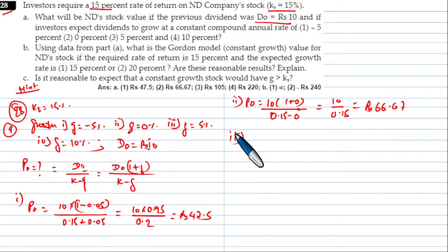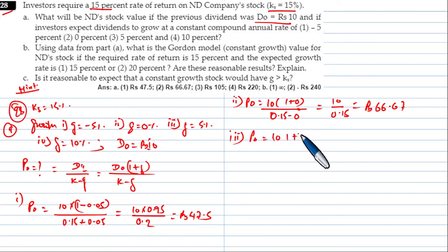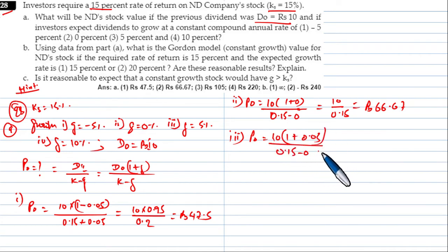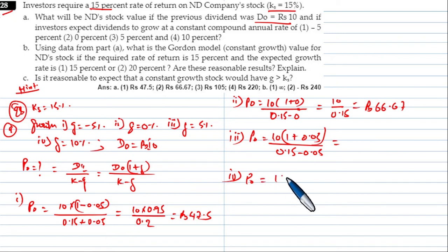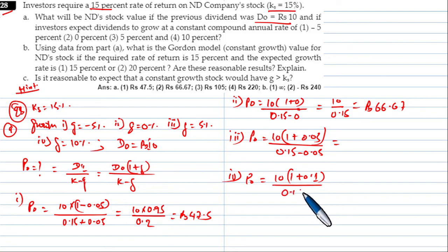For g = 5%: P0 = 10 × (1 + 0.05) / (0.15 - 0.05) = 10 × 1.05 / 0.10. Continuing on, for g = 10%: P0 = 10 × 1.10 / (0.15 - 0.10).